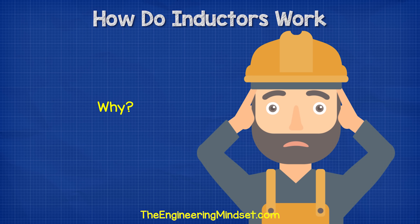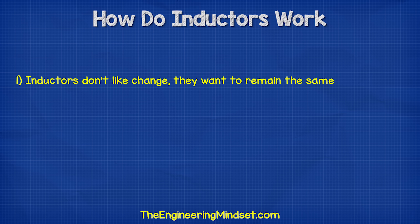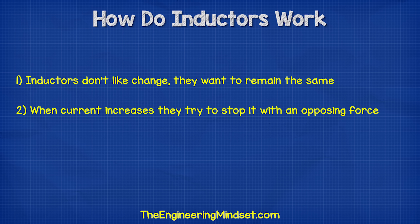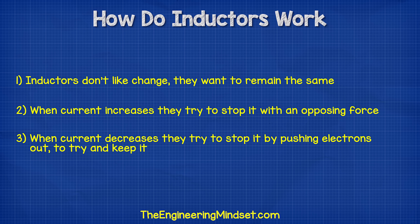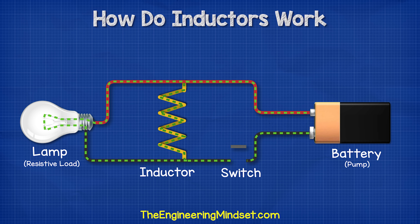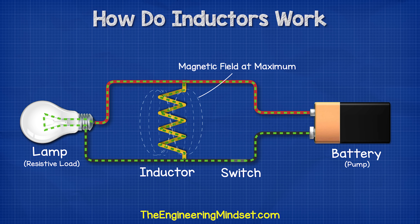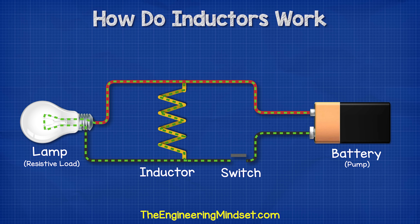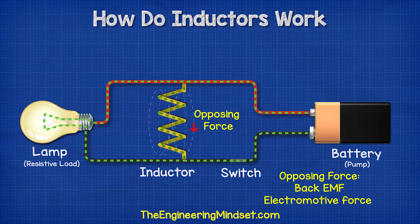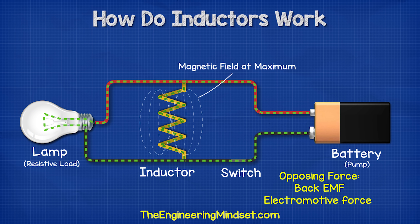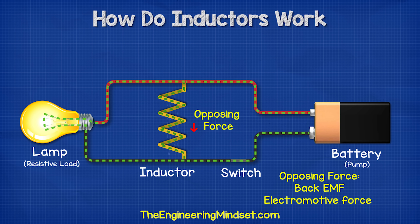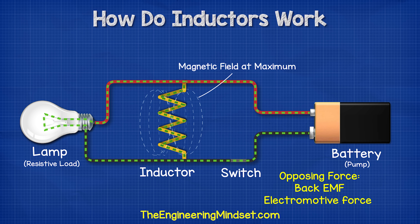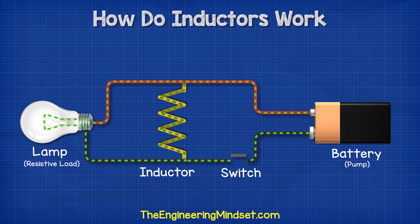So why does it do this? Well, inductors don't like change in current — they want everything to remain the same. When the current increases they try to stop it with an opposing force. When the current decreases they try to stop it by pushing electrons out to keep it the way it was. So when the circuit goes from off to on there will be a change in current — it has increased. The inductor is going to try to stop this, so it creates an opposing force — a back EMF, or electromotive force. This back EMF opposes the force which created it, in this case the current flowing through the inductor from the battery. Some current is still going to flow through though, and as it does it generates a magnetic field which will gradually increase.